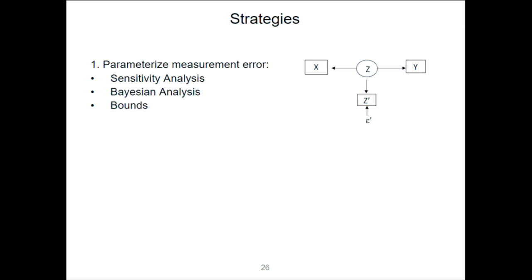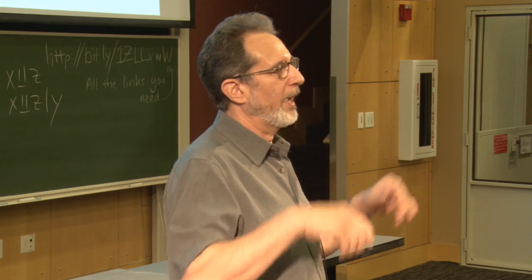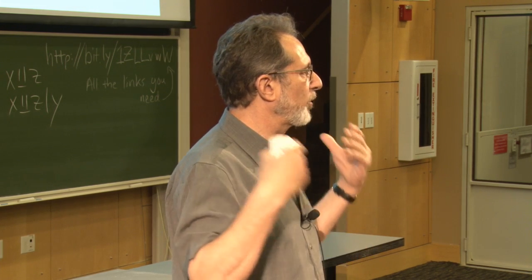It might be the case that all the conclusions I want are pretty clear for the first six levels of measurement error, but once I go beyond the sixth into the seventh and eighth, I get problems. Theoretically as a scientist you can say: as long as I can assume my measurement error is bounded below this particular level, I'm okay with what I actually want to conclude. That's roughly what a sensitivity analysis does.